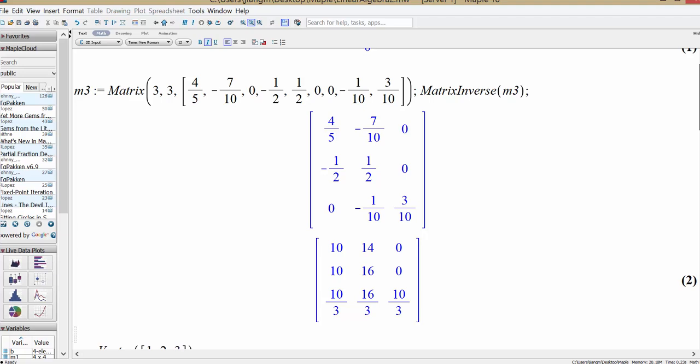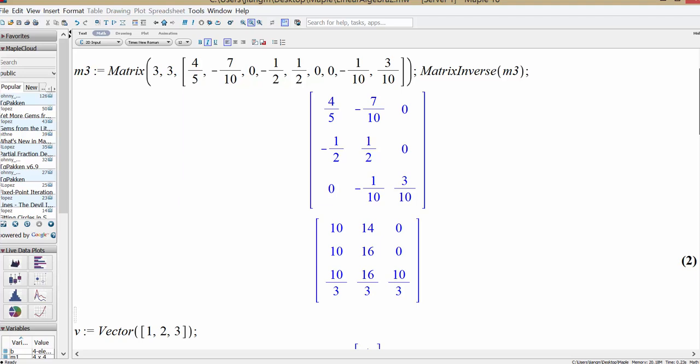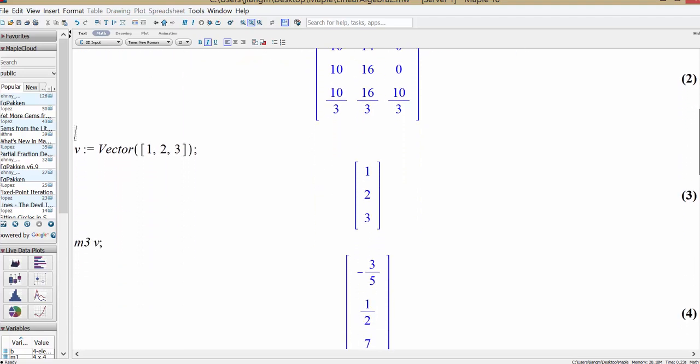Now we're going to try to see how we can solve a linear system. In general, you have a non-homogeneous system. So you want to solve Ax is equal to b. So you need another b vector. So this is how we can just enter a vector. So v is a vector.